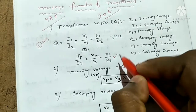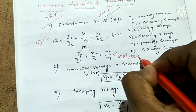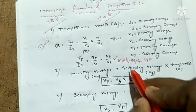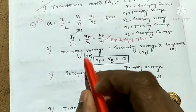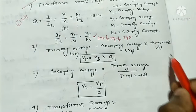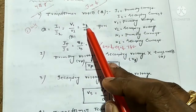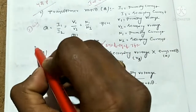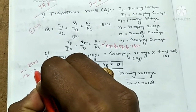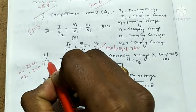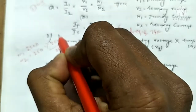If you want to see the EMF Equation of Transformers, I will show you how. Primary voltage — find out the primary voltage, secondary voltage, and turns ratio. If we are given secondary voltage and N1 equals 2500 and N2 equals 250, then the turn ratio is 2500 by 250, which equals 10.